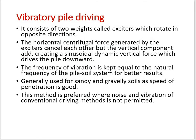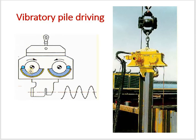In vibratory pile driving, there are two exciters — two rotating weights. These exciters develop a sinusoidal wave: as they rotate, they create a horizontal centrifugal force that gets cancelled out, leaving only the vertical component. This vertical dynamic force allows the pile to be pushed down. The movement of the exciters creates a dynamic sinusoidal vertical impact load that pushes the pile downward — that is why this method is called vibratory pile driving.